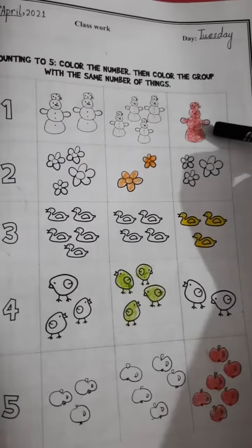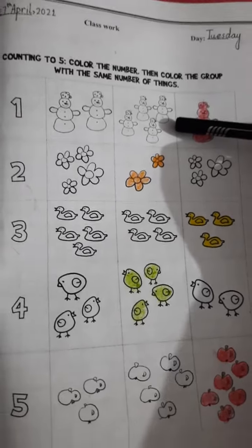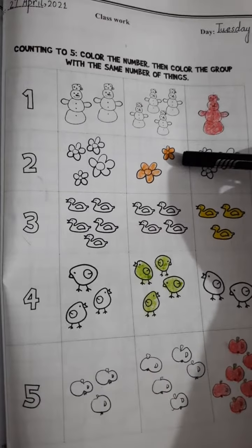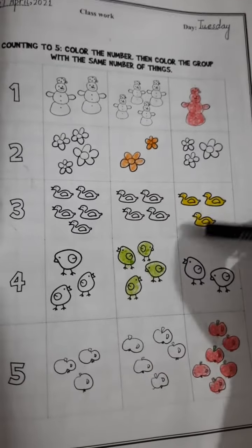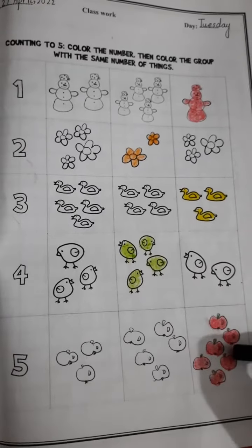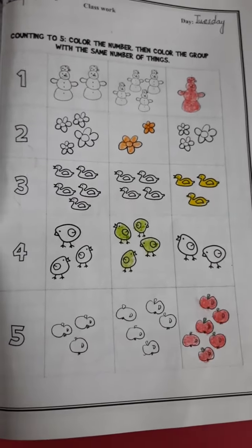Same as it is, two flowers, three ducks, four birds, and five apples. Okay, you have to complete the working in this manner. You have to do coloring in these numbers also. This is your classwork.